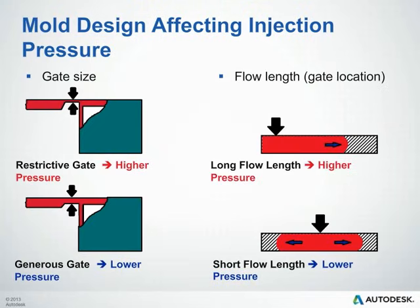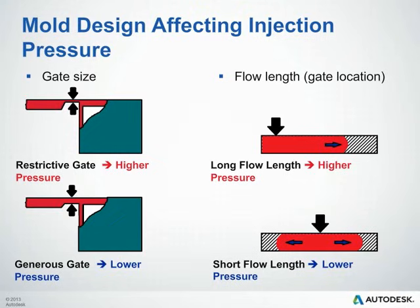How does mold design affect injection pressures? Gate size is one factor — a restrictive gate will give much higher pressure than a more generously sized gate. Flow length, dictated by gate location, can also impact pressure. A longer flow length will have higher pressure, whereas a shorter flow length — for example, a centrally gated part — will have lower pressures.